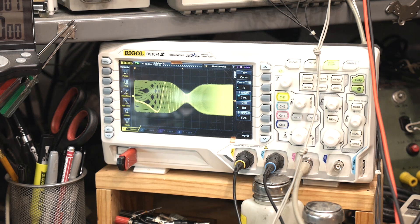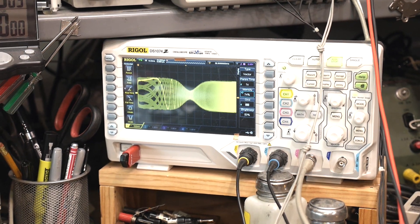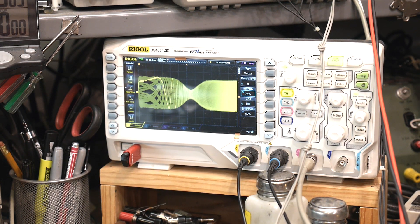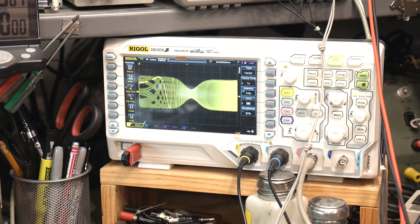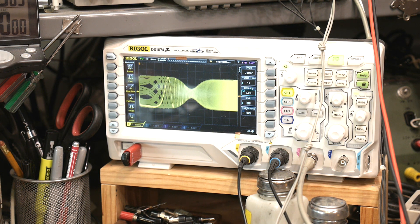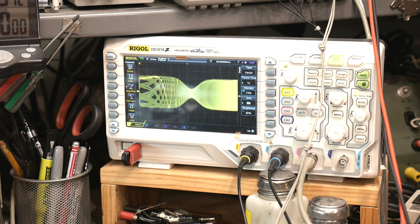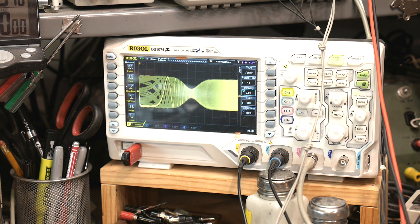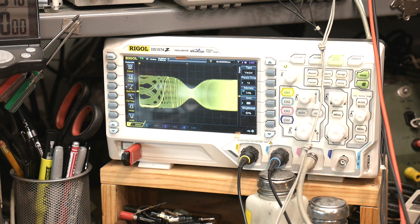And we get a notch filter. So this is a twin T filter. You can find equations for calculating things to pick the right components for the shape of the notch filter you want.